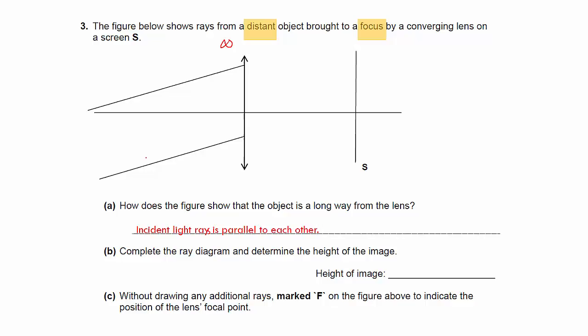You just need to draw one light ray that is parallel to the rest of the light rays. This is very important because the object is at a very long distance, so all light rays must be parallel. But you want to draw the light ray that passes through the center of the lens. You should shift it slightly towards the center. Roughly, this would be where the image is. So to determine the height of the image, you measure this.